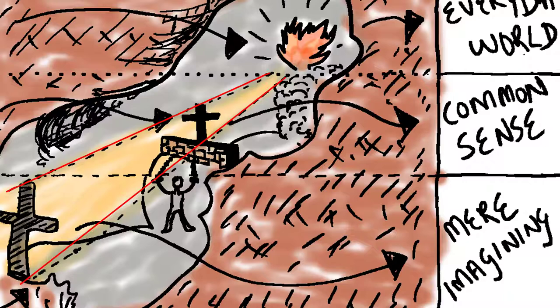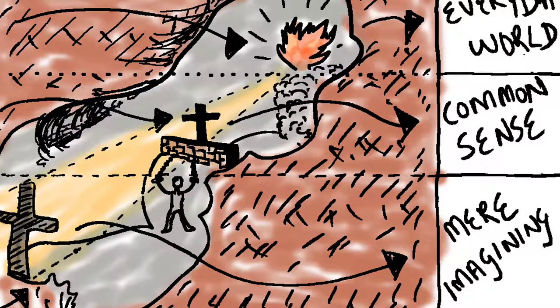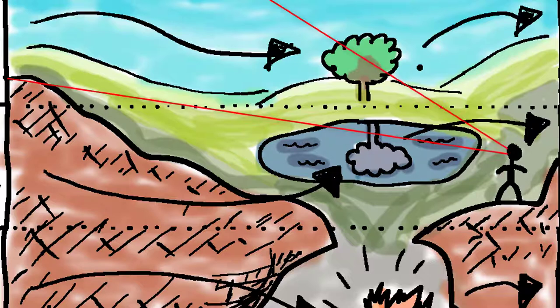In Plato's account, because this is all the prisoner has experienced, he or she takes those shadows of the cave to be reality. That's the reality that they know. Plato gives an account where someone else comes down the cave, breaks the chains, and enables the person to slowly but surely climb outside of the cave and see what the real world actually is.